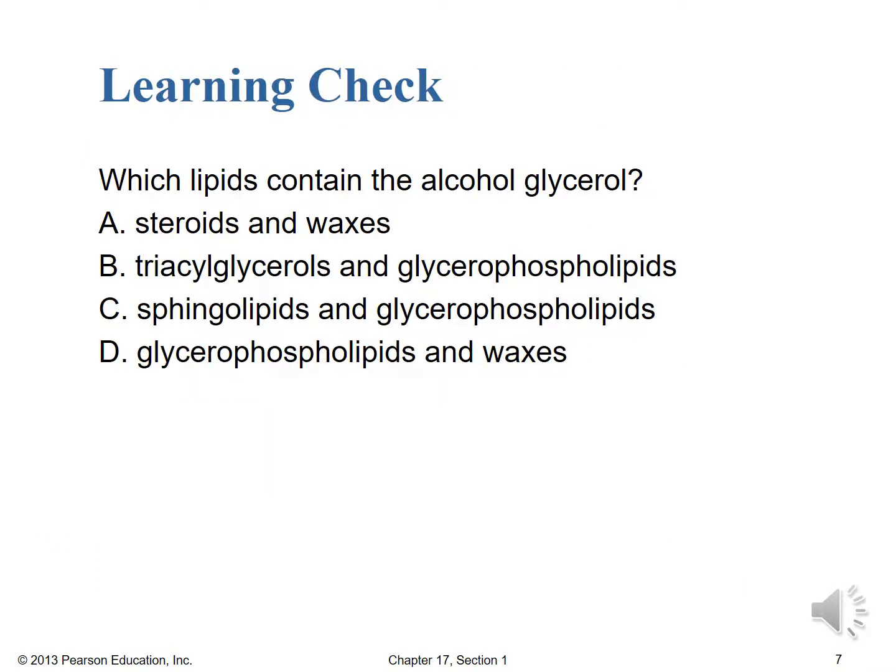Before leaving this introductory lecture, let's stop with a learning check. Which lipids contain the alcohol glycerol? Is it A, the steroids and waxes? B, the triacylglycerols and glycerophospholipids? C, the sphingolipids and glycerophospholipids? Or D, the glycerophospholipids and waxes? Stop the video if you need to take a few moments to think it over, make your selection, and start back up when you're ready to check your work. Good luck!